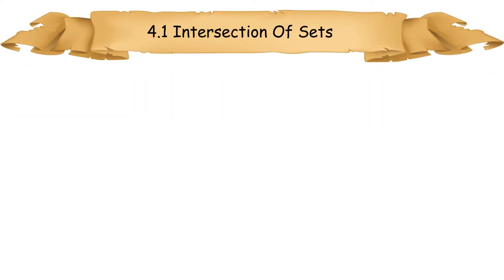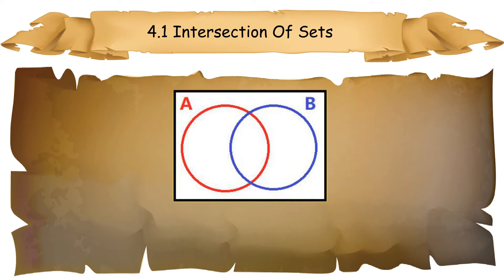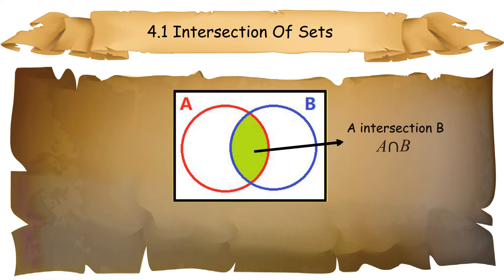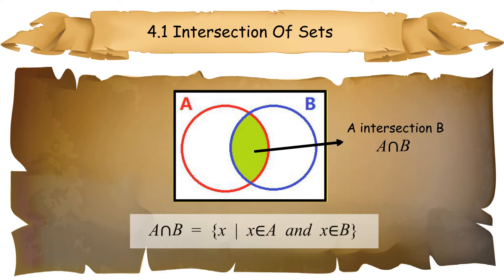4.1 Intersection of Sets. In this Venn diagram, sets A and B overlap. Values that belong to both set A and set B are located in the center region where the circles overlap. This region is called the intersection of the two sets. The elements are in set A and in set B. This intersection is only where the two sets overlap. An intersection of sets exists when there are more than one set.